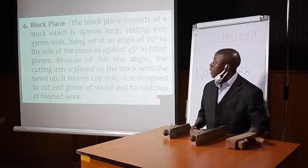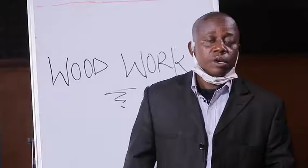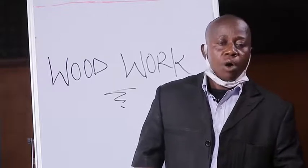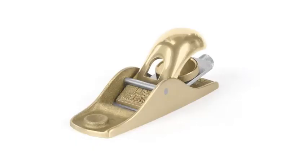Next is the block plane. The block plane consists of a stock which is 150 millimeters long, and the cutting iron is 35 millimeters wide. The cutting iron is set at an angle of 20 degrees to the sole, as against 45 degrees in other planes. Because of this low angle, the cutting iron is placed on the stock with the bevel up. The block plane does not have a cap iron like other planes, but it is designed to cut end grain of wood and to touch up finished work before final sandpapering.